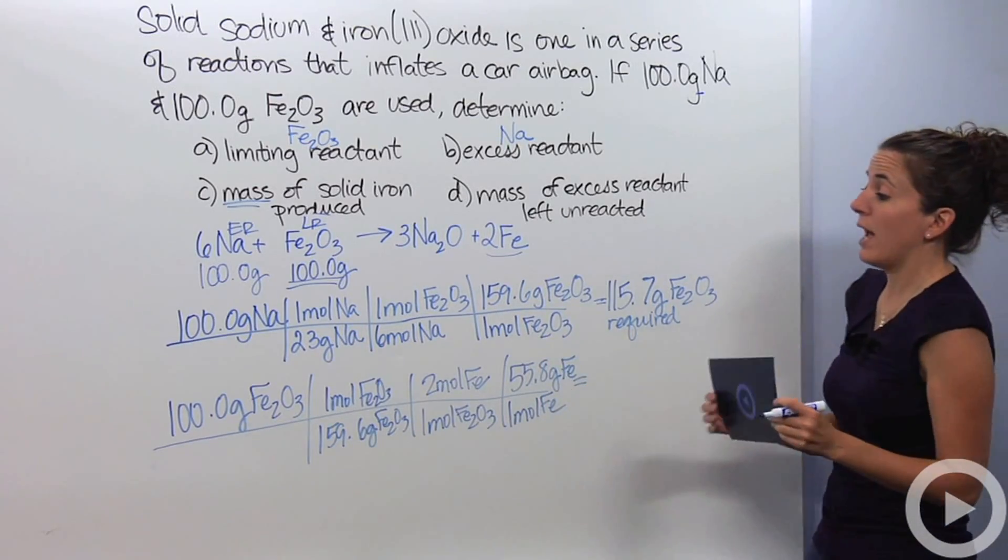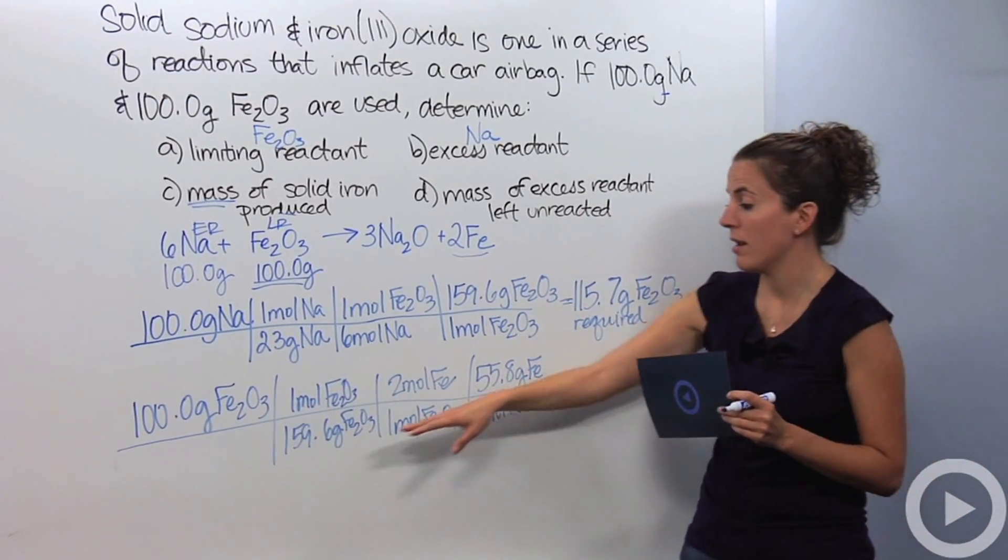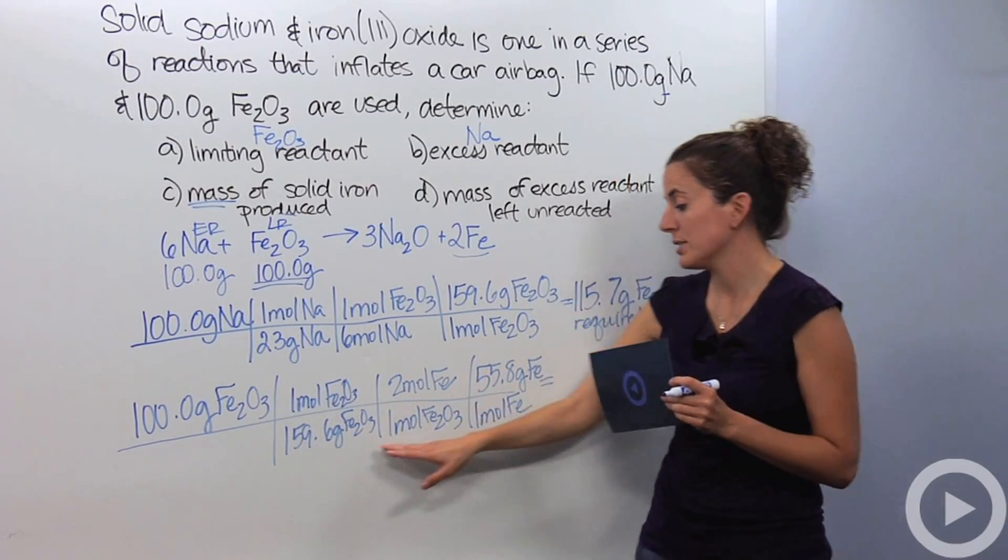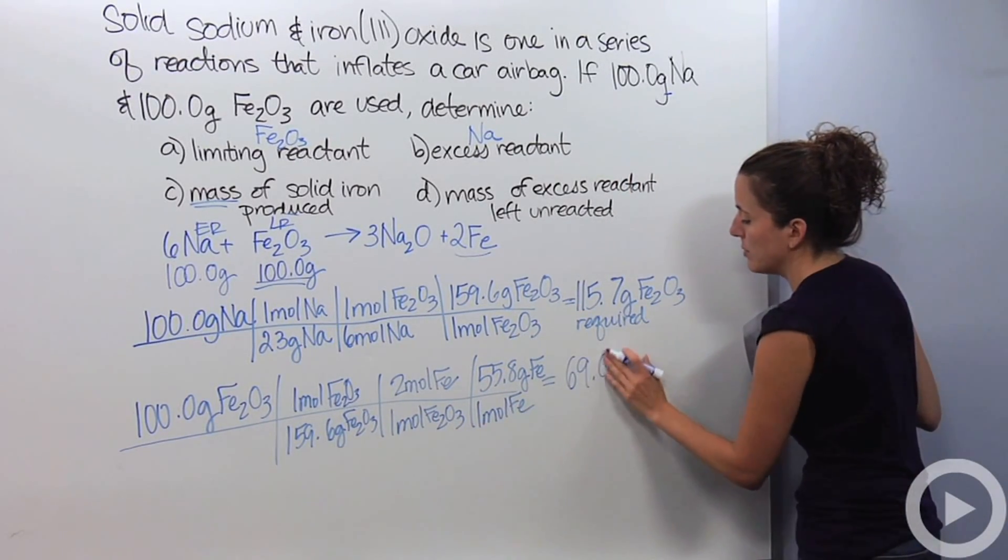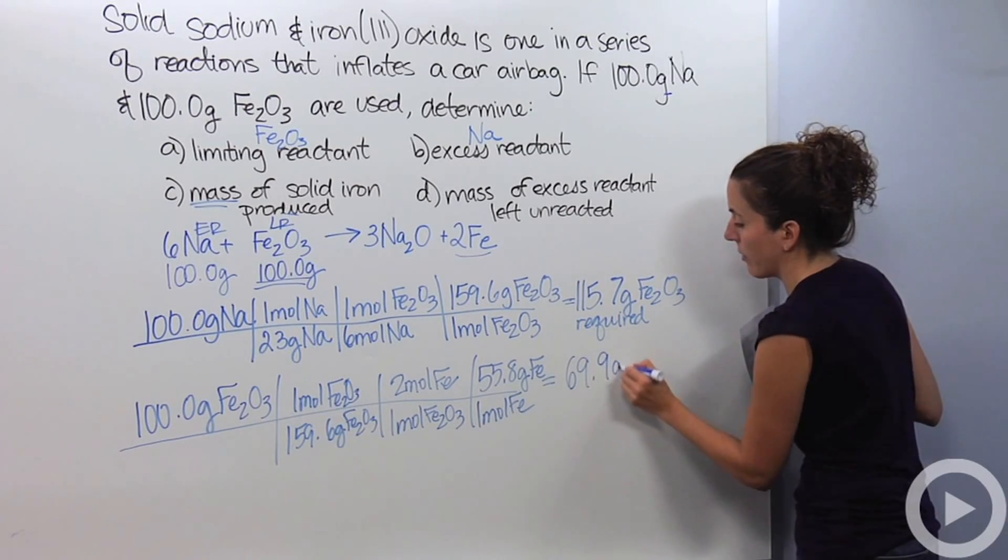So, doing this math, 100 times 1 times 2 times 55.8 divided by 159.6 divided by 1 divided by 1, gives me 69.9 grams of iron.